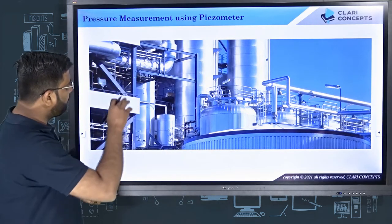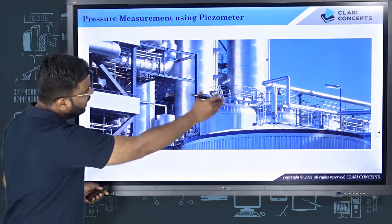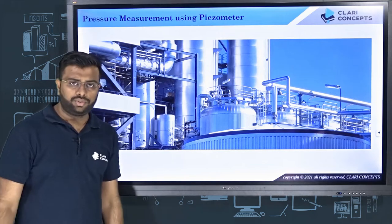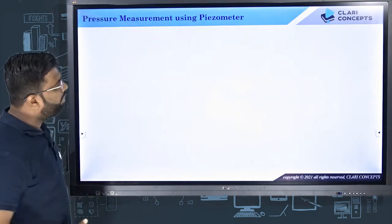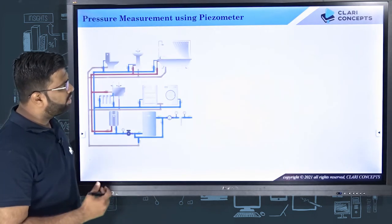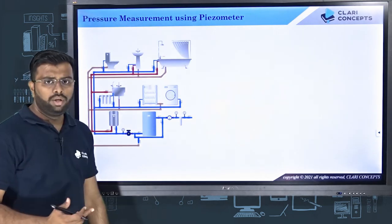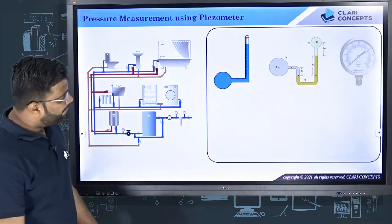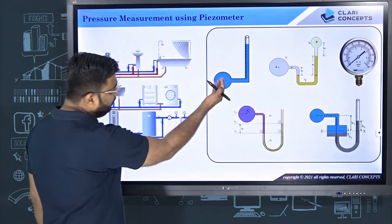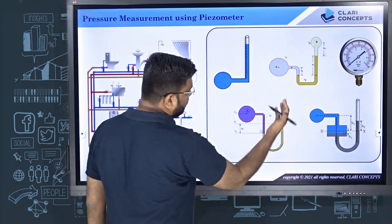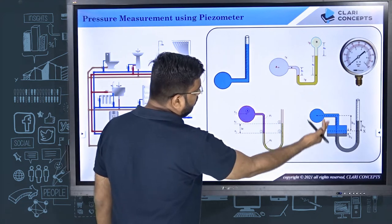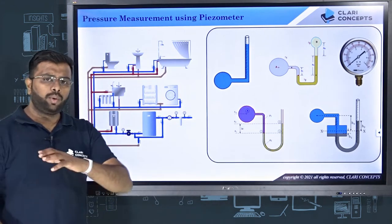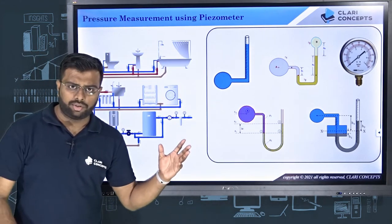Measuring the pressure of a fluid flowing through different pipes is very essential in industries. There are many devices available to measure the pressure of a fluid flowing through pipes. Some of them are the piezometer, U-tube manometer, single column manometer, and Bourdon pressure gauges. There are many devices to measure the pressure.